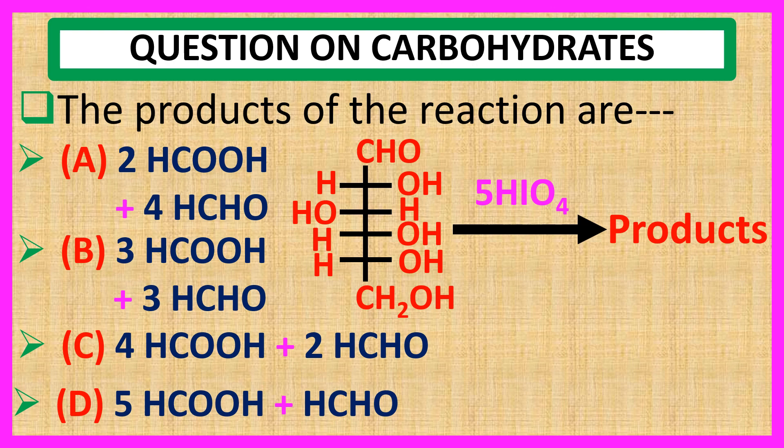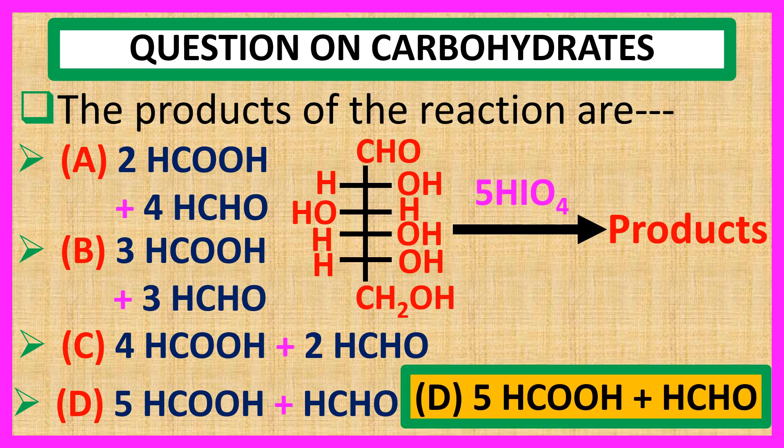The answer is D: 5 molecules of formic acid plus 1 molecule of formaldehyde. The explanation we will see in the next slide.